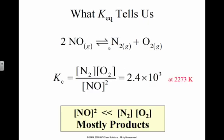This one right here, I've got my products over the reactants squared, and now my K value is 2.4 times 10 to the third, which is a large number. Why would this be a large number? Only if these numbers right here are larger than this number, this value down here. So this is mostly the products.